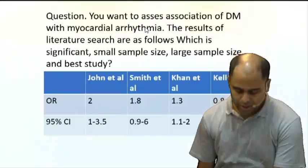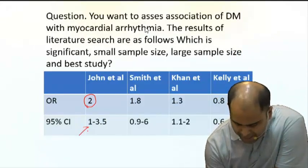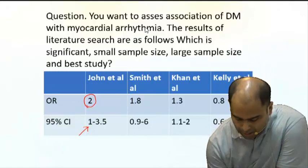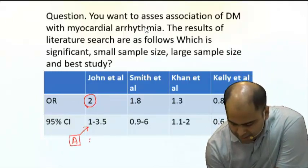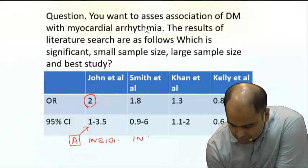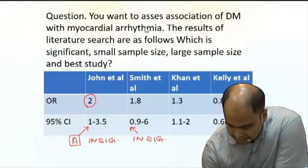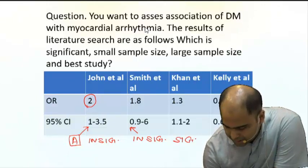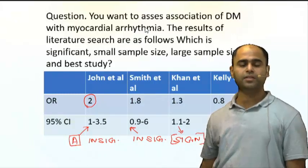In this question, the odds ratio is 2 — excellent — but the 95% CI touches 1. As per Rule A, if it touches the null value, it is insignificant. The same applies for the study by Smith et al. and Kelly et al. — both are insignificant.